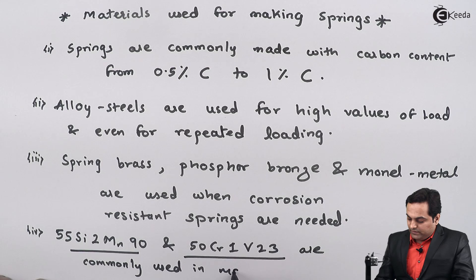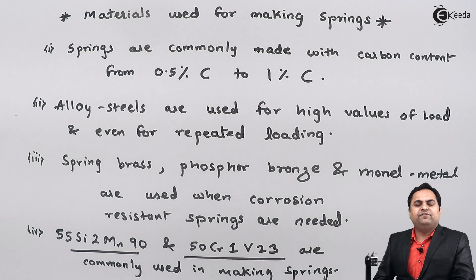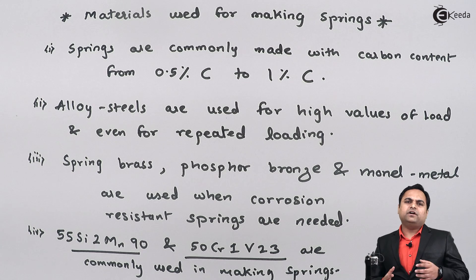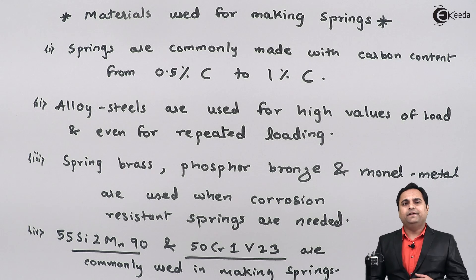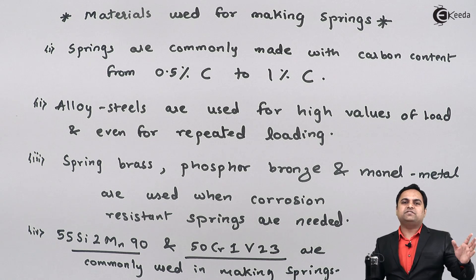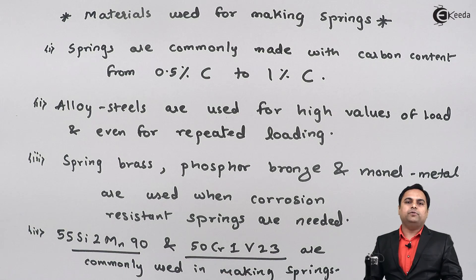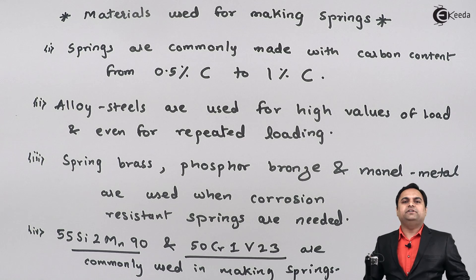So here we have seen what are the materials used for springs. Springs are mostly made up of iron plus carbon, where the carbon content normally ranges from 0.5% to 1%. We also have alloy steels used when the load is of high value or repeated. Then we have corrosion resistant materials like spring brass, phosphor bronze, and monal metal for springs subjected to moisture. Finally, 55Si2Mn90 and 50Cr1V23 are the most commonly used spring materials, containing silicon, manganese, chromium, and vanadium.